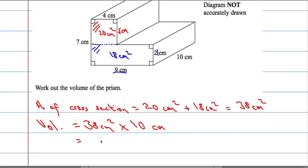38 times 10 is 380, and centimeters squared times centimeters is centimeters cubed. In other words, we know that volume should be in cubic units.